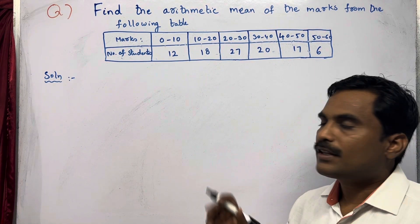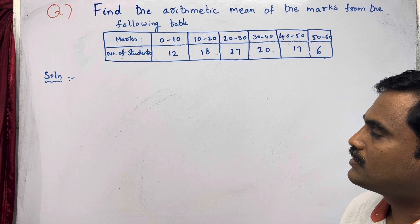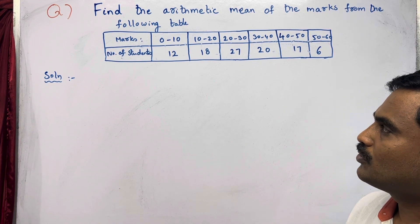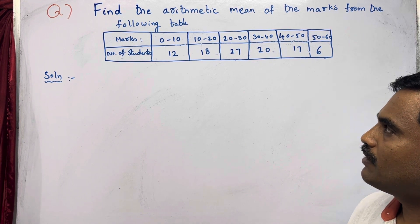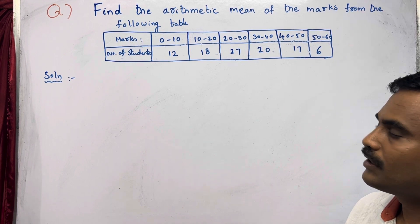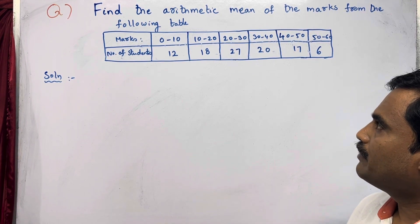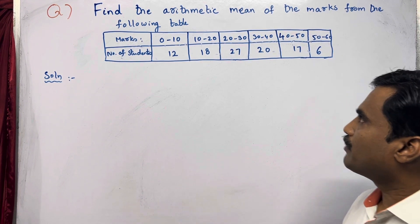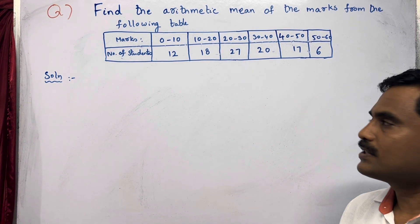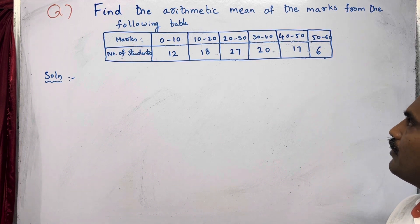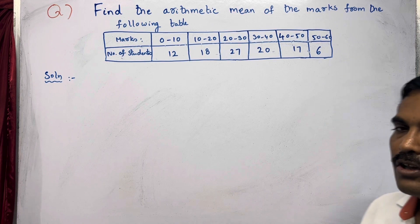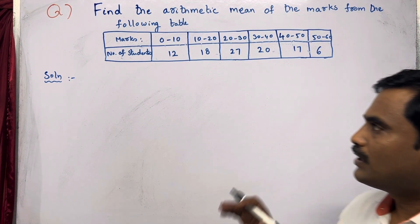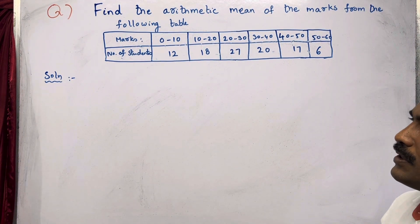Here they have given a table with marks and number of students. Marks: 0 to 10, number of students is 12; 10 to 20, 18 students; 20 to 30, 27 students; 30 to 40, 20 students; 40 to 50, 17 students; and 50 to 60, 6 students. From this table, you need to find the arithmetic mean.